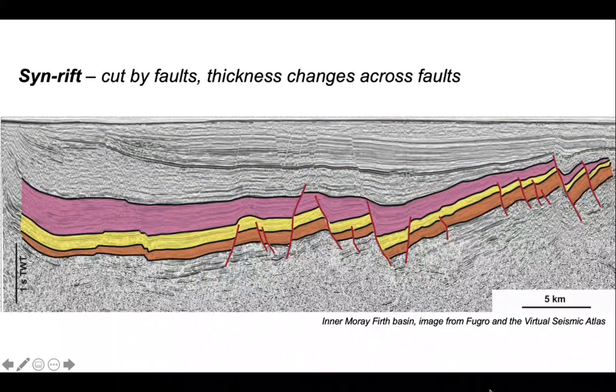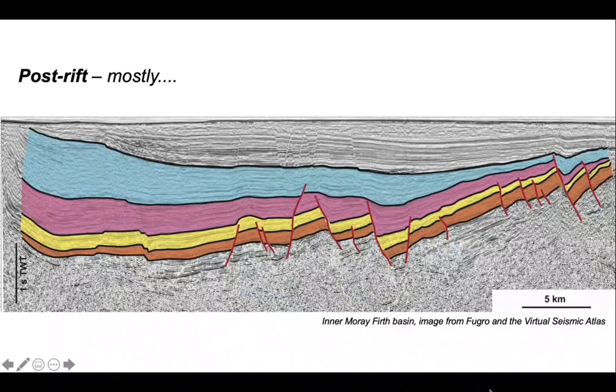Let's put on some synrift and you can see that this package changes thickness across the fault blocks and the faults obviously cut it. This is also mostly post-rift, though as you can see it's quite difficult to pick it from the surrounding megasequences.